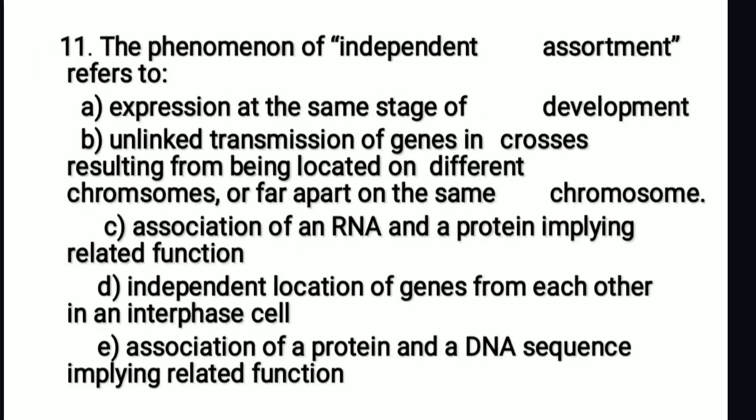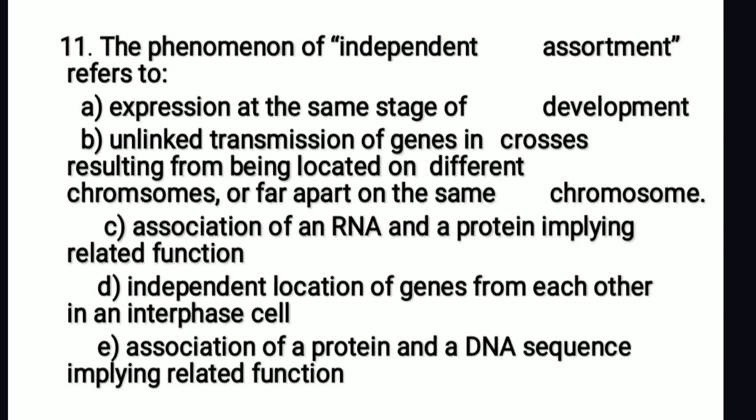The phenomenon of independent assortment refers to: the right answer is option B — unlinked transmission. If there is linkage, there is no independent assortment. Independent assortment occurs only when there is no linkage, i.e., genes are located far apart on the same chromosome or on different chromosomes.